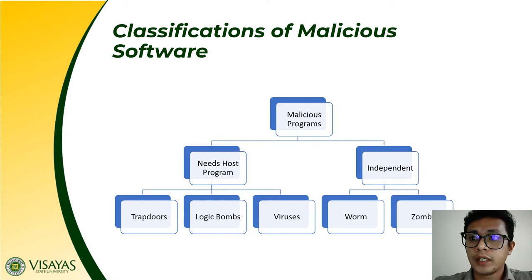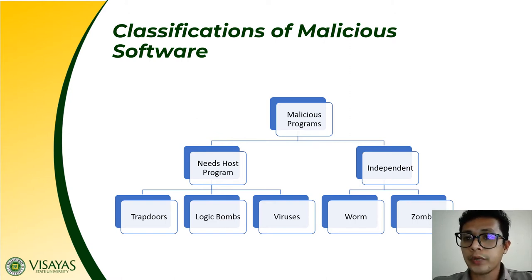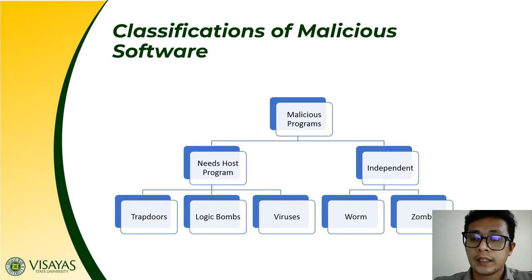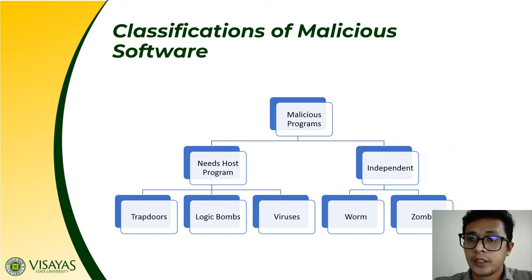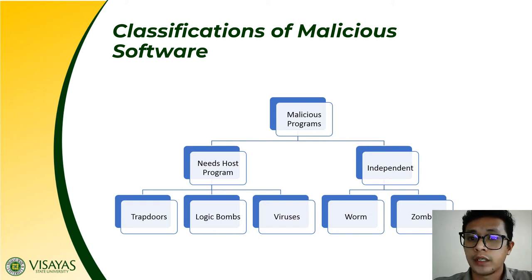You also have independent malicious software. When you say independent malicious software, these are programs which can operate and stand on their own — they don't need a host program for execution. This includes worms and zombies. Worms and zombies can replicate themselves. This diagram presents the different types of malicious software and its classification, whether it needs a host program or they are independent.